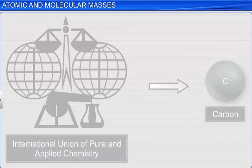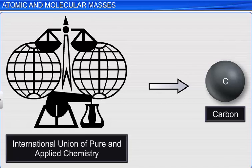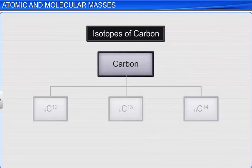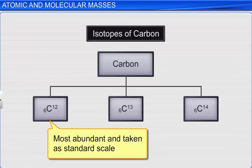In 1961, scientists met at the International Union of Pure and Applied Chemistry and decided to use carbon as the standard base. Carbon has three isotopes: C12, C13, and C14. Since C12 was found to be the most abundant, it was taken as the standard scale.